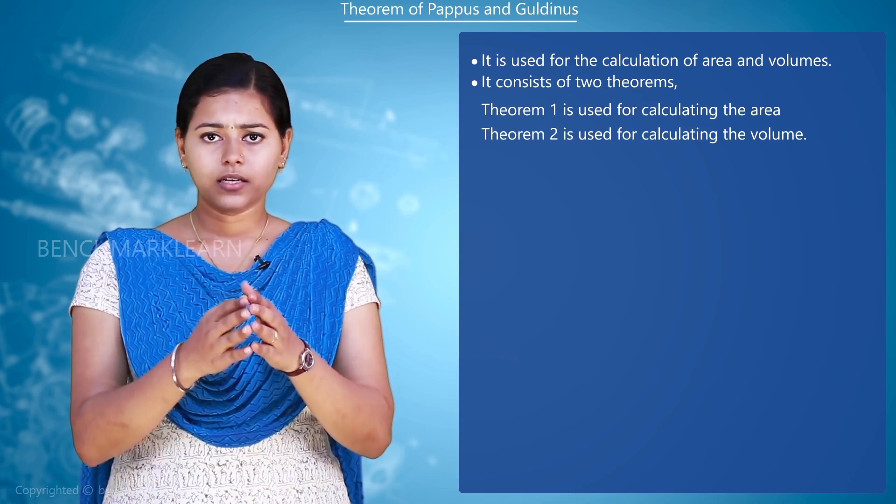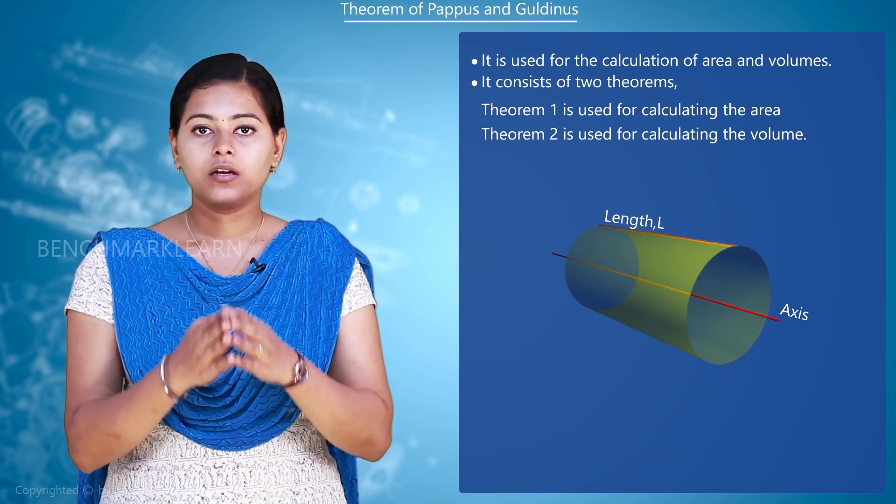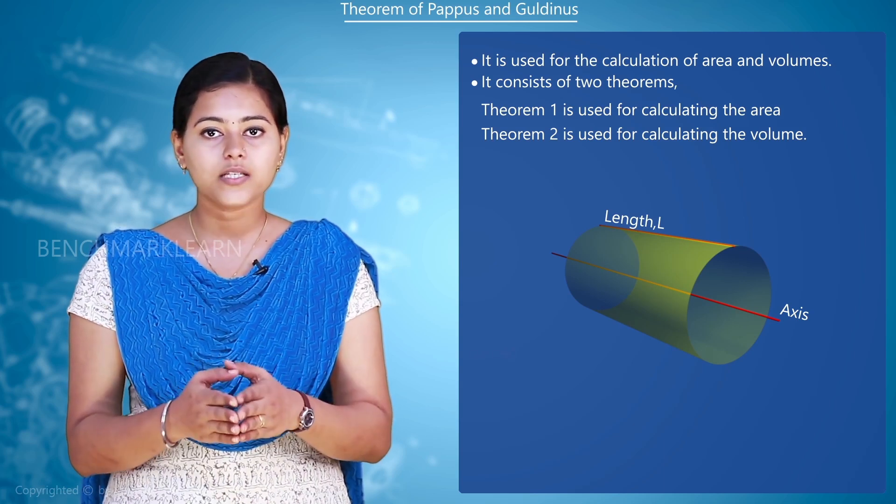Theorem one: consider a length l revolving around an axis. Let the distance from the axis be y.